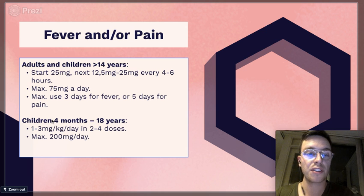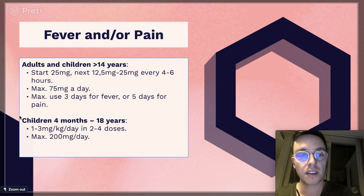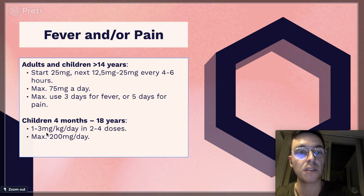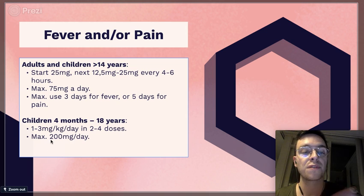For children, you can only get it on prescription and if your child is four months to 18 years, the correct dose would be one to three milligrams per kilogram a day in two to four doses divided for a maximum of 200 milligrams a day.